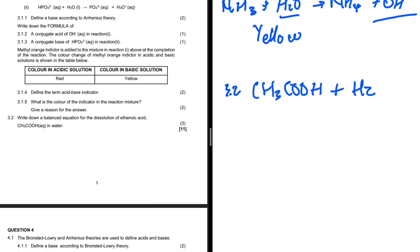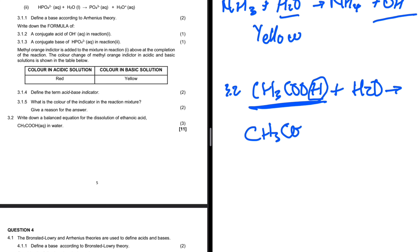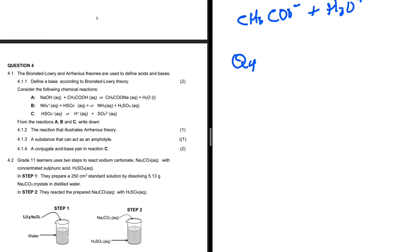Question 3.2: CH₃COOH plus H₂O. Since CH₃COOH is an acid, it will donate a proton, leaving CH₃COO⁻. Water will act as a base and accept the proton, giving H₃O⁺.